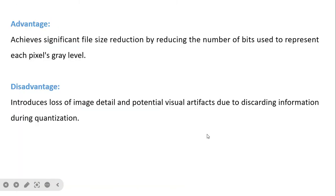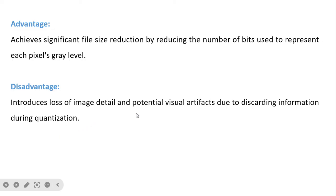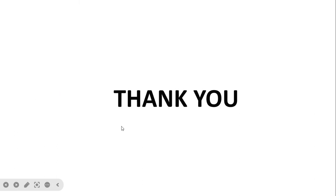The advantage of IGS coding is that it achieves significant file size reduction by reducing the number of bits used to represent each pixel's gray level. The disadvantage is that it introduces loss of image detail and potential visual artifacts due to discarding information during quantization. However, by incorporating information from the previous pixel, it attempts to reduce false contouring and retain image quality compared to simple truncation.